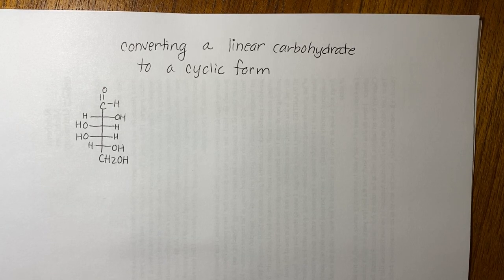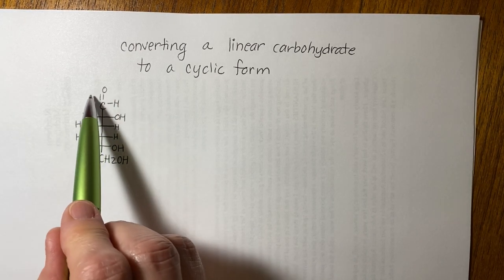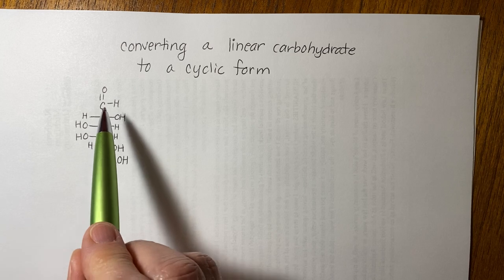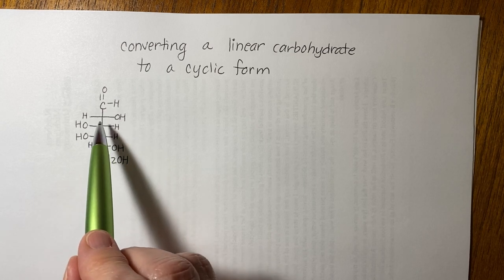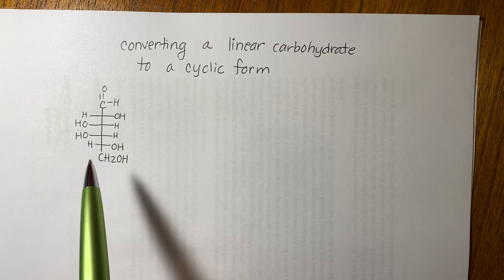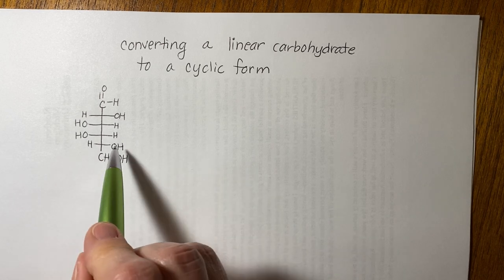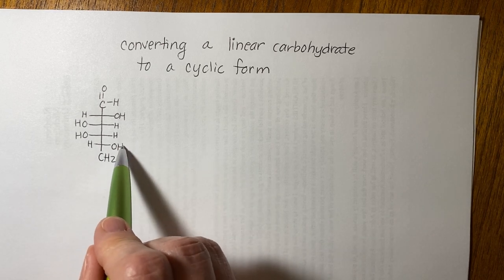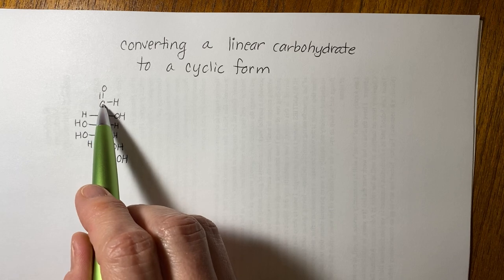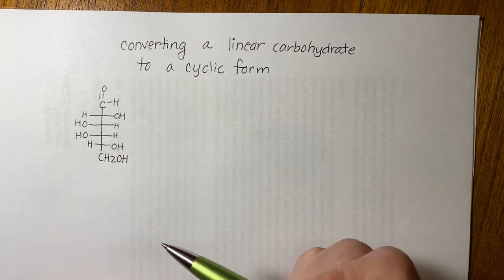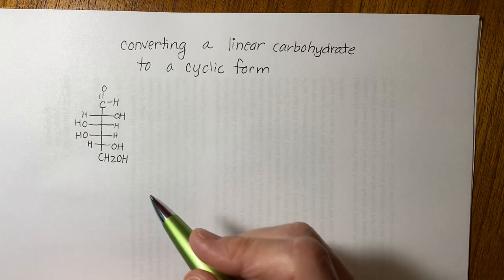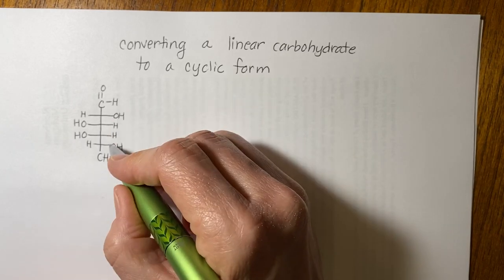This video shows you how to convert a linear monosaccharide to a cyclic form. In this example we're using an aldo hexose — it's an aldo because it's got an aldehyde group, and a hexose because it has six carbons. It's also a D sugar because the last hydroxyl away from the carbonyl carbon is on the right.